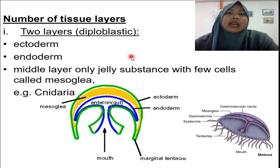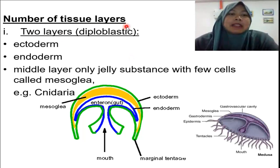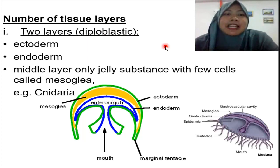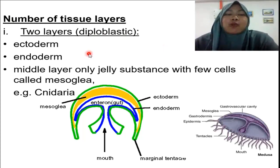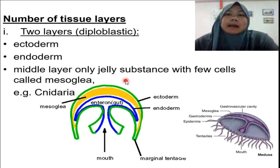Some animals have tissue, and those with tissue are sub-classified by how many layers of tissue they have. Some animals have two layers of tissue, which we call diploblastic. The two layers are the ectoderm, the outermost layer, and the endoderm, the innermost layer. Between the ectoderm and endoderm, the mid layer is occupied by only jelly substances with few cells called mesoglia. This kind of tissue organization is found in animals in the phylum Cnidaria — for example, the jellyfish has an ectoderm layer shown in green and an endoderm layer shown in blue, with the middle layer filled with jelly substances and few cells called mesoglia.